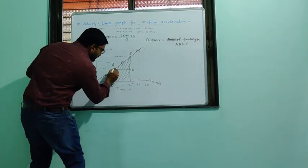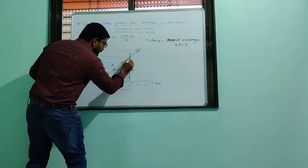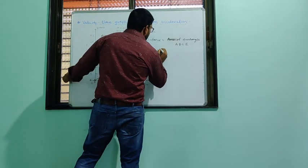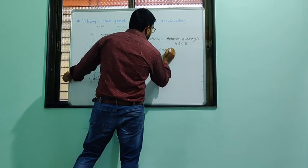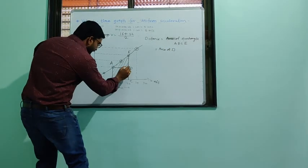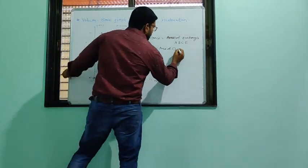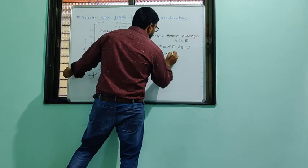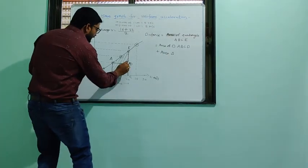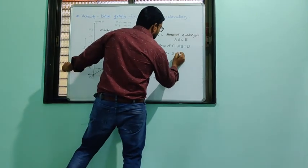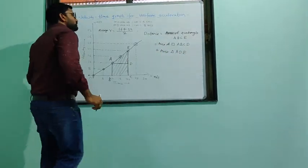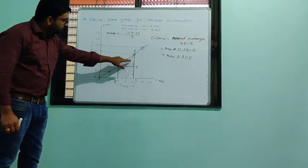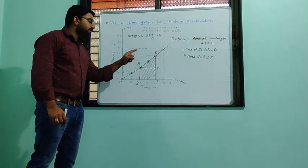This area is nothing but the distance covered. The shape consists of one rectangle and one right-angle triangle. So the area of quadrilateral ABCE = area of rectangle ABCD + area of triangle ABE. By calculating these areas, we also get the distance.